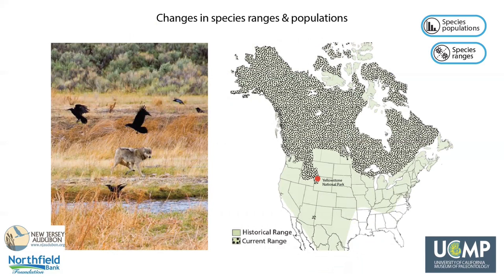Human activities, especially land use practices and hunting and fishing, have dramatically impacted species populations and species ranges. For example, wolves were once found in North America from the Arctic to Mexico. After the 1920s, wolves were no longer found in most of the lower 48 states due to habitat fragmentation and hunting, as the species was viewed as a threat to humans and livestock. In 1973, wolves became protected under the Endangered Species Act, and since then populations have stabilized. The reintroduction of wolves to Yellowstone National Park decreased elk populations that were overgrazing vegetation. Since the reintroduction of wolves, this vegetation has recovered, providing food and habitat for other species such as bison and beavers, which have become more abundant in the park.